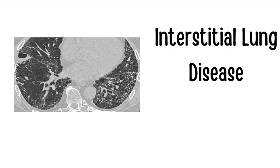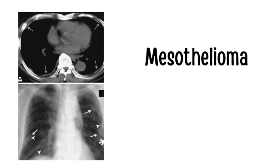In these images, the tiny white arrows are pointing to pleural plaques, which are seen in mesothelioma. Mesothelioma occurs due to asbestos exposure. It's very high yield to know that smoking does not increase the risk of mesothelioma. Psammoma bodies are also seen in mesothelioma, as well as in papillary thyroid cancer, serous adenocarcinoma, and meningioma.